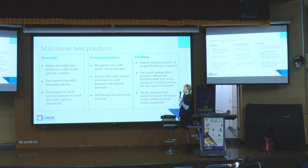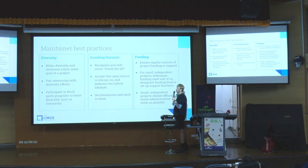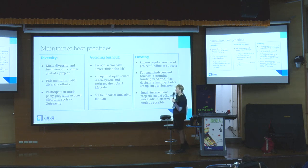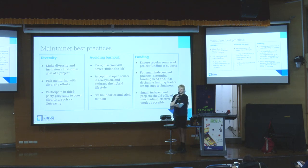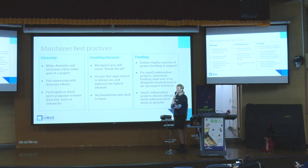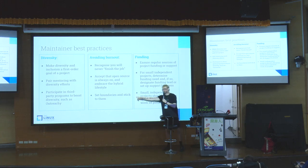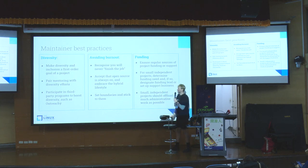The fourth category is diversity — making diversity, equity, and inclusion a priority, offering mentoring paired with diversity efforts, and participating in third-party programs like Outreachy to boost diversity. The fifth category is avoiding burnout. Personal tips for maintainers include: set your boundaries and stick to them — easier said than done — and accept that open source is always on and embrace the hybrid lifestyle. Also, recognize that you'll never finish your job.